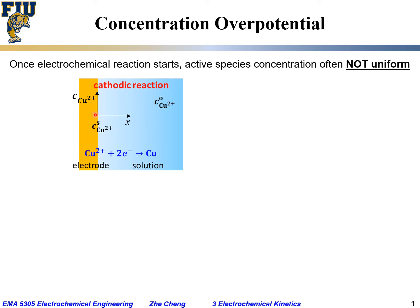How much lower depends on the current, if we don't have active stirring — considering the actual condition. Under certain conditions, you may find the surface concentration Cs for Cu²⁺ ion at the electrode starts from near 0 and increases gradually, reaching the bulk value deep in the solution. This would be the cathodic situation — a reduction situation for Cu²⁺ ion — where the concentration near the surface is lower because Cu²⁺ ion is consumed for this cathodic half-cell reaction.